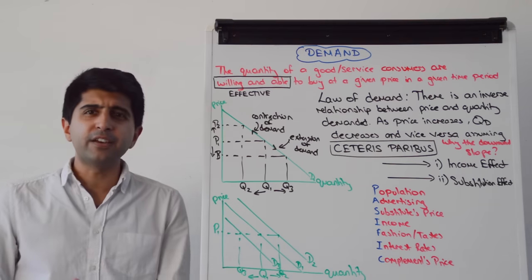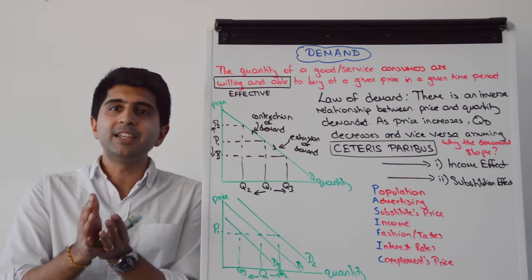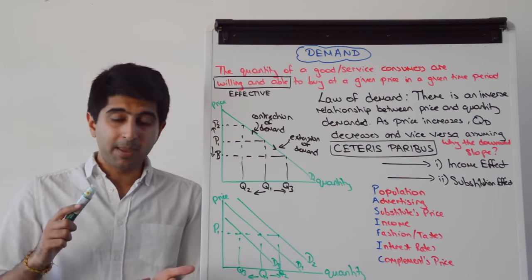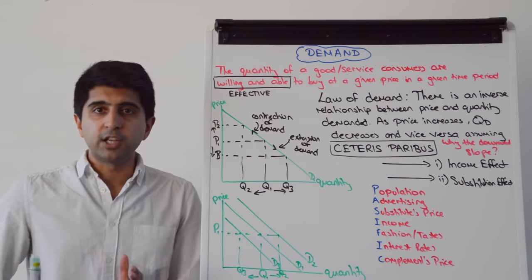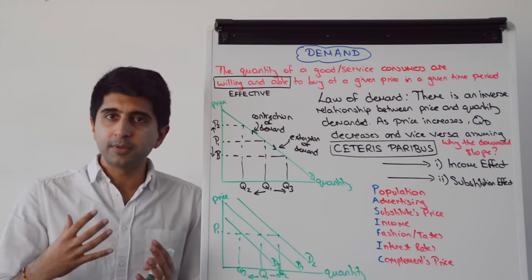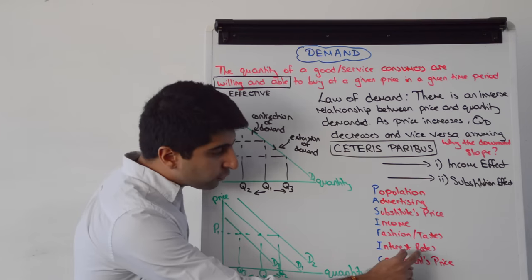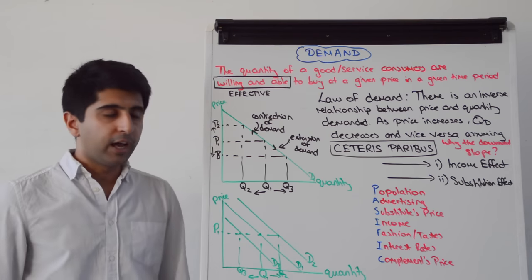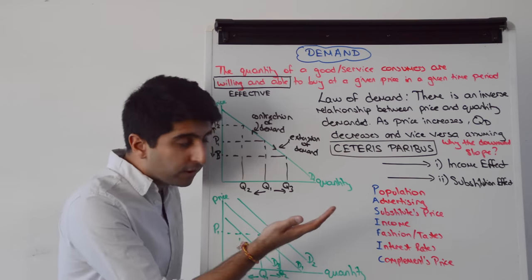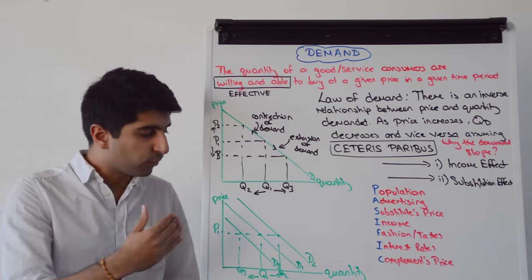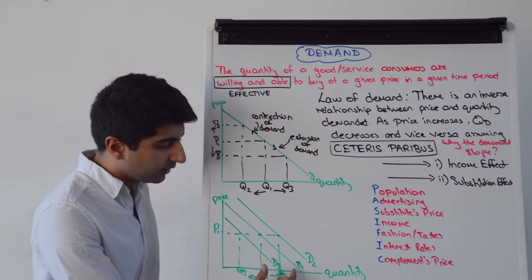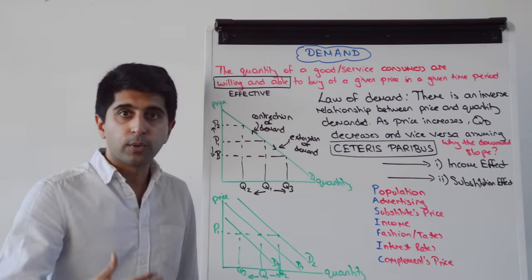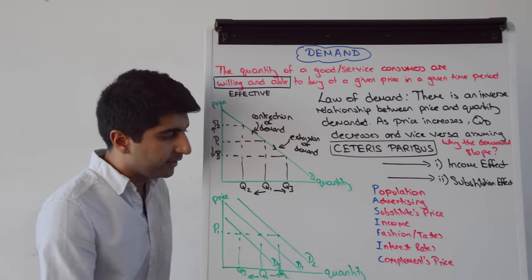Interest rates can really affect the demand for goods or services if consumers need to borrow in order to buy them — goods like housing, cars, holidays, jewellery, and furniture. If interest rates go down, it's cheaper to borrow, increasing demand and shifting the curve from D1 to D2. If interest rates go up, borrowing is more expensive, reducing demand and shifting the curve from D1 to D3.